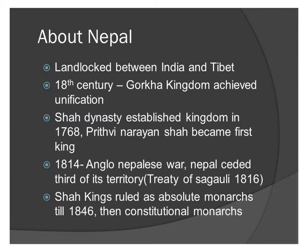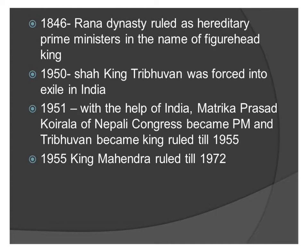In 1814, in the Anglo-Nepalese war, Nepal was defeated and it ceded one-third of its territory in the Treaty of Sugauli. The Shah kings ruled as absolute monarchs till 1846 and thereafter as constitutional monarchs. They supported friendly relations with British rule, and the British treated Nepal as a buffer state. From 1846 onwards, the Rana dynasty ruled as hereditary prime ministers in the name of figurehead Shah kings.